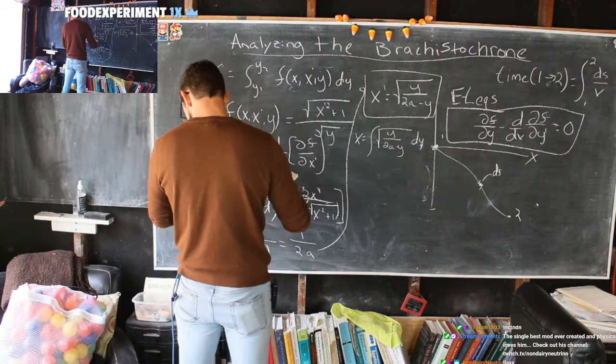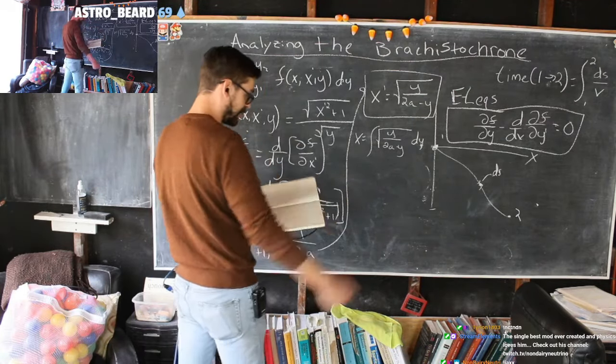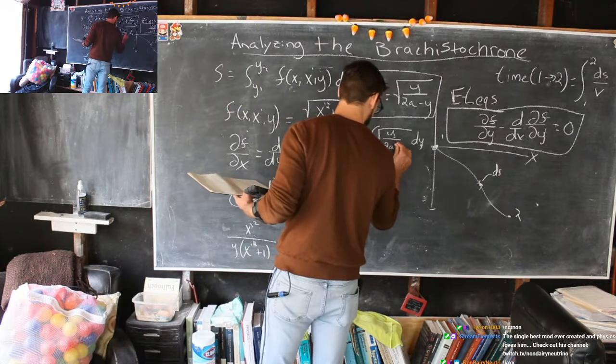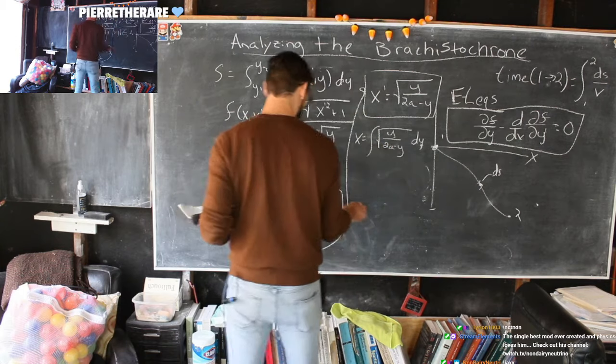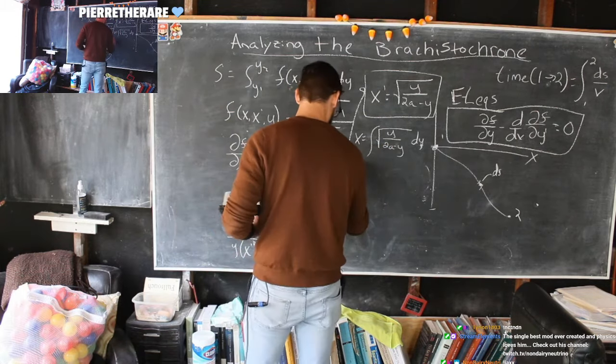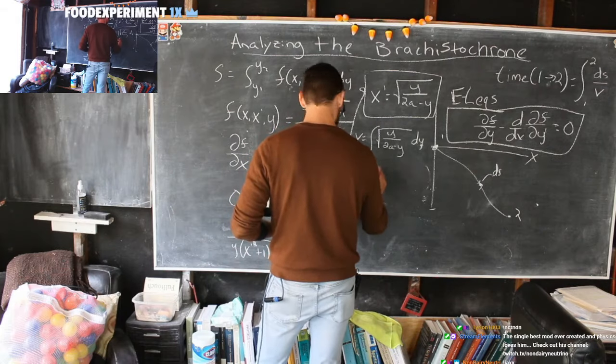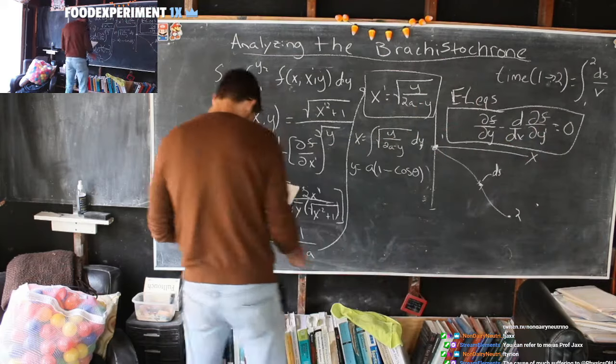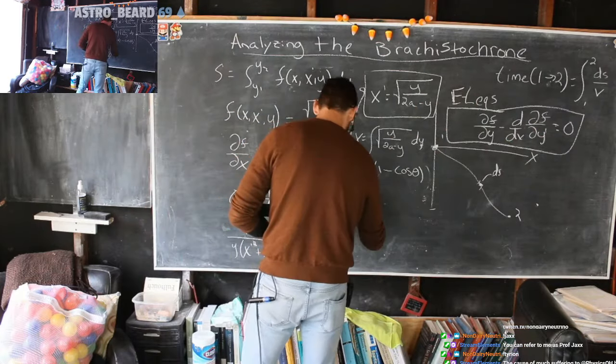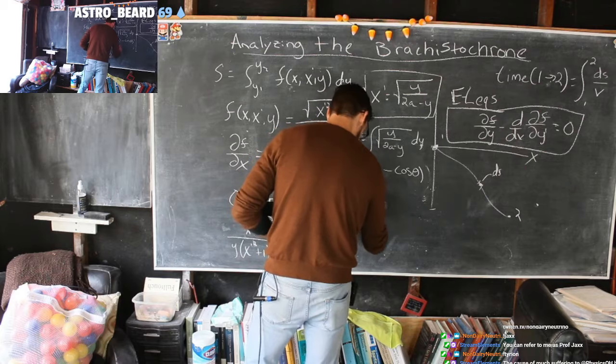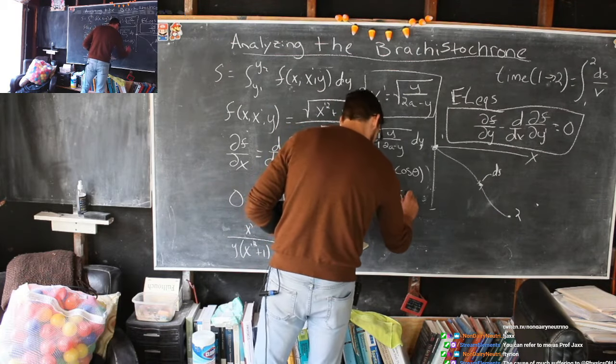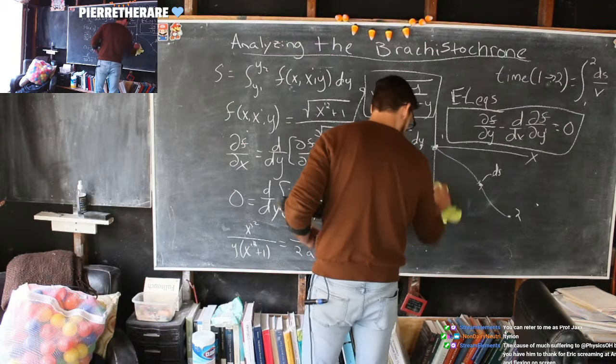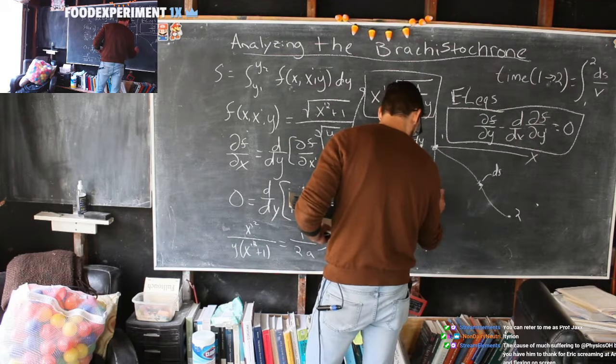This has a nice trig substitution. If you want to believe it, if you're an integral master, like I am not, you can find out relatively easily. This has a nice trig substitution. Y is equal to A one minus cosine theta. And we'll end up with the following function of X. X is going to be A times theta minus sine theta plus some constant C. Let's get rid of this part of this. Plus some constant C. Constancy.